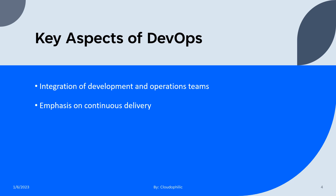Another important aspect of DevOps is the emphasis on continuous delivery. With DevOps, organizations aim to deliver software updates and improvements as quickly and frequently as possible, using automation and other tools to streamline the process. This allows organizations to respond more quickly to customer needs and stay ahead of the competition.